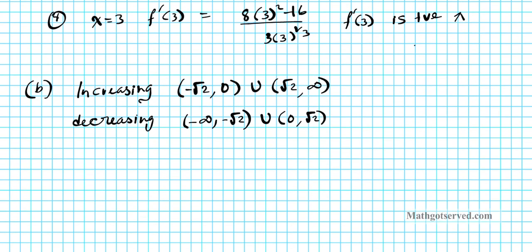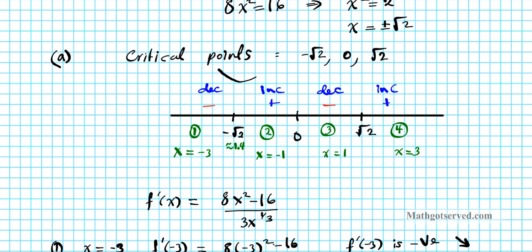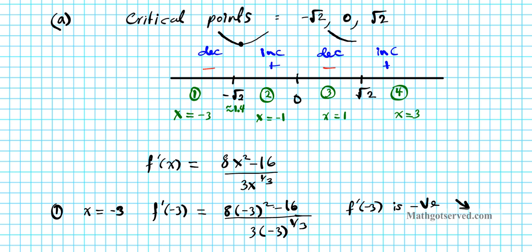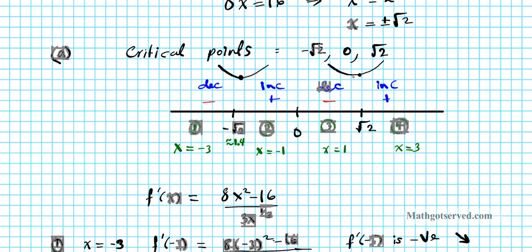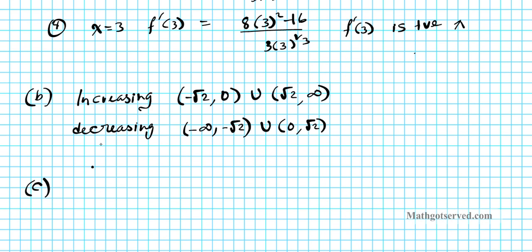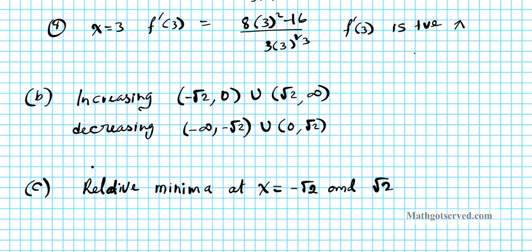For the relative extrema: where f is decreasing then increasing, we have a relative minimum at x = −√2, and again decreasing then increasing gives a relative minimum at x = √2. At x = 0, the derivative does not exist — it never attained the value of zero there — so we do not have a relative extremum at x = 0. The function has relative minima at x = −√2 and x = √2, and no relative maximum.